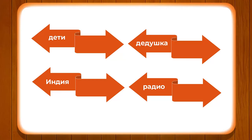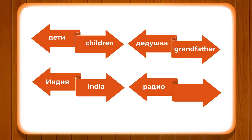We have a few more words: DETI meaning children, DEDUSHKA meaning grandfather, INDIYA meaning India, and RADIO meaning radio. Pay attention — these words have the stress mark (udharenie) on a particular vowel, which is why the pronunciation of that vowel is higher and the rest follow.